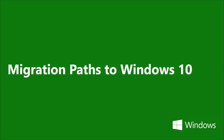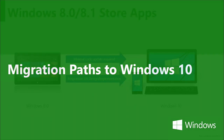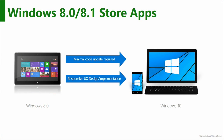Let's look at the migration paths — where you're coming from and what your expectation can be. First, Windows 8.0 and 8.1 store apps. UWP is a superset of the WinRT API set you're already used to programming with. If you've taken the time to learn all the namespaces and interaction models of Windows 8, that flows right into Windows 10. The majority of your code will move across without any updates needed.